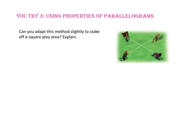Pause the video and do you-try number 3. Can you adapt this method to stake off a square play area? Yes. Remember, squares are also rectangles, so the rectangle's diagonal properties apply, plus the diagonal property of a rhombus. In order for the shape to be a square, the diagonals must be congruent, bisect each other, and be perpendicular.